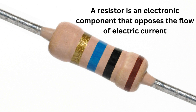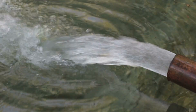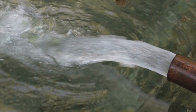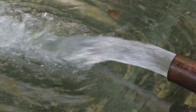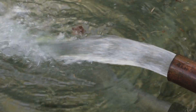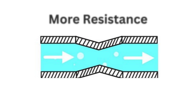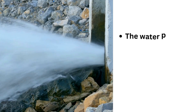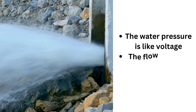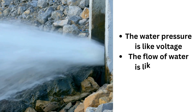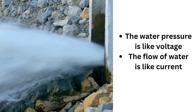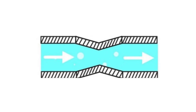Let's make this even simpler. Think of a water pipe. A wide pipe allows a lot of water to flow. Now, if you reduce the pipe to a smaller diameter, the water flow slows down. That's exactly what a resistor does to electricity. The water pressure is like voltage, and the flow of water is like current. So a resistor is like a narrowing in the pipe, controlling the flow.